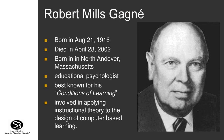Robert Mills Gagné was born on 21 August 1916 and died on April 28, 2002. He was born in North Andover, Massachusetts. He is an educational psychologist by profession, best known for his Conditions of Learning. He involved himself in applying instructional theory to the design of computer-based learning.